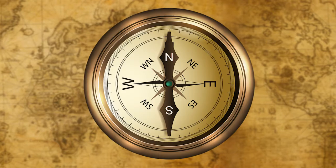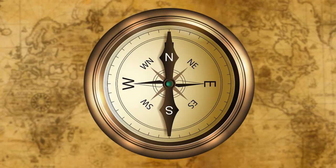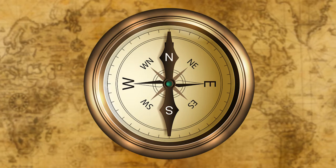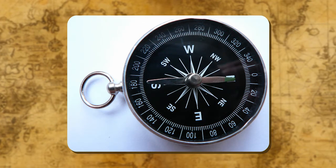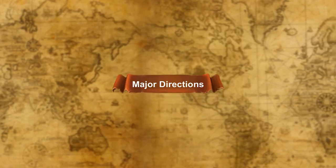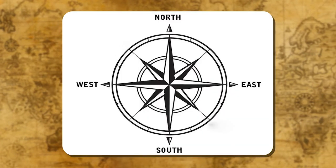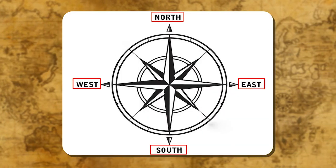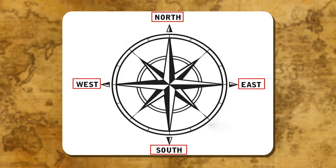Compass. It is a very simple instrument used to find main directions. It is called a compass. Chinese were the first to invent the compass, and now we all use it. Major directions: there are four major directions — north, south, east and west. These are called cardinal points.